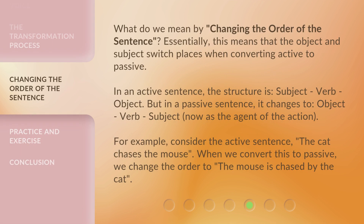What do we mean by changing the order of the sentence? Essentially, this means that the object and subject switch places when converting active to passive. In an active sentence, the structure is Subject, Verb, Object. But in a passive sentence, it changes to Object, Verb, Subject — now as the agent of the action.